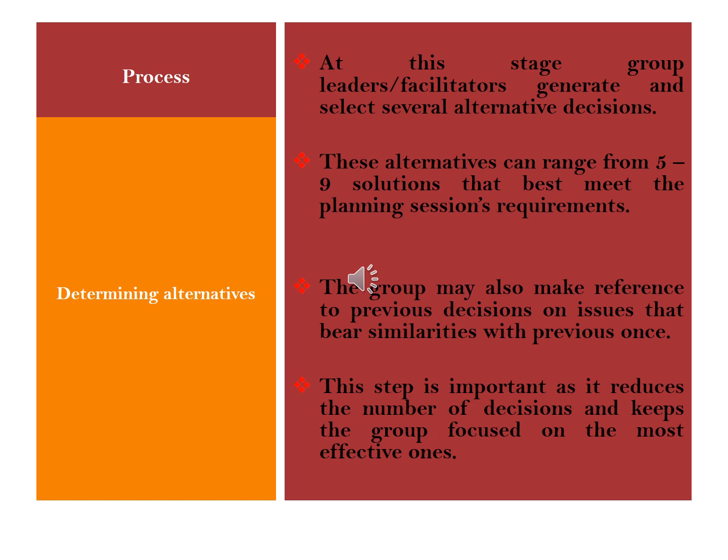The group may also make reference to previous decisions on issues that bear similarities with previous ones. If a decision is to be made on an issue that has occurred in the organization before, there is nothing wrong with group leadership looking into the records to establish how previous issues were resolved. If they were resolved successfully and the circumstances still remain, then nothing bars the group from adopting previous solutions. This step is important because it reduces the number of decisions and keeps the group focused on the most effective alternatives.